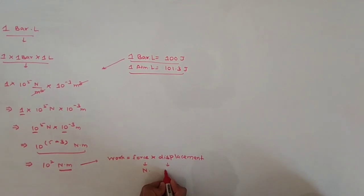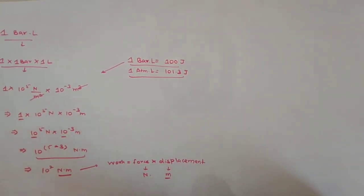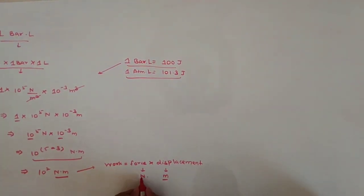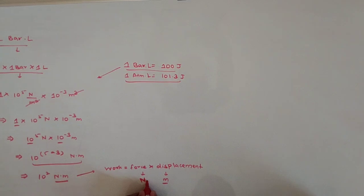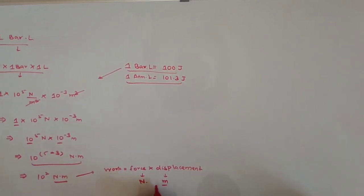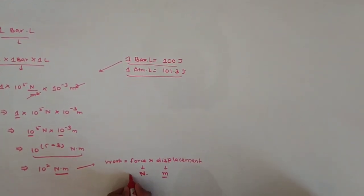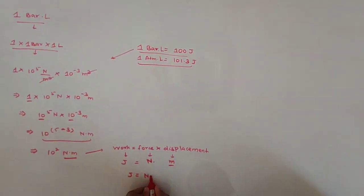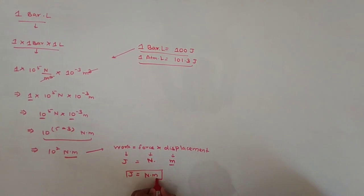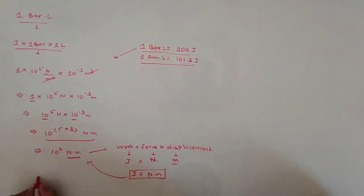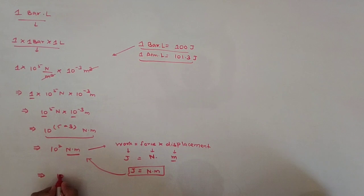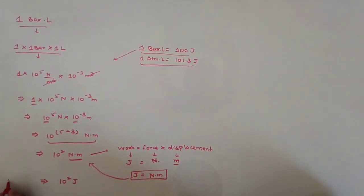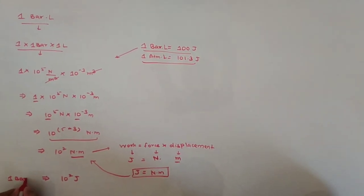The unit of force is Newton and displacement is in meter, so the unit of work is joules. We conclude that 1 joule equals 1 Newton·meter. Substituting this, we get 10² joules, which equals 100 joules — so 1 bar·litre equals 100 joules.